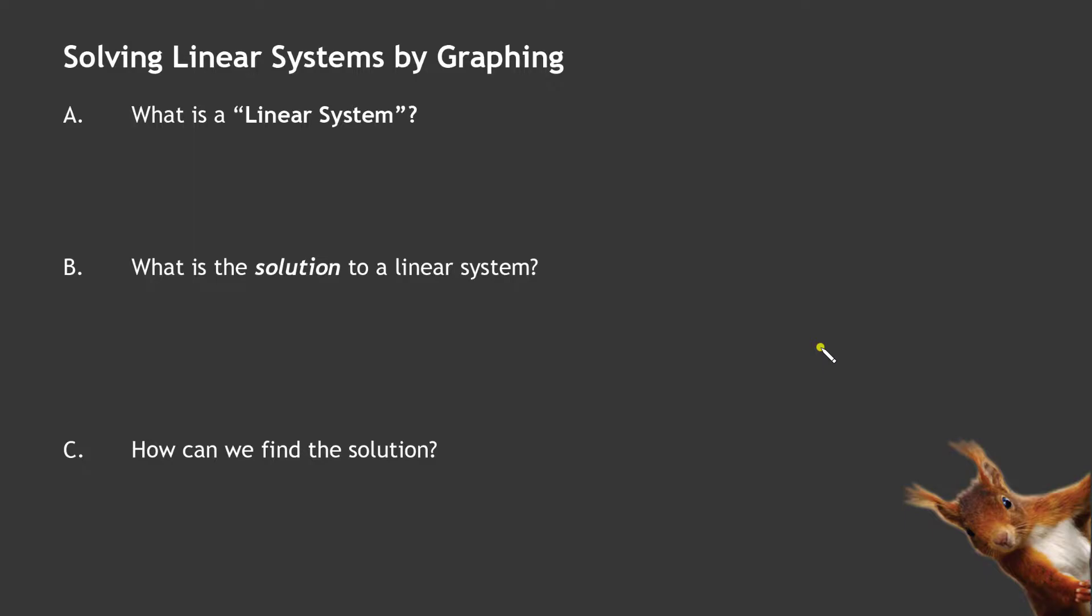So what exactly is a linear system? Let's break this down. Well, linear just means it's a line, so it's a straight line, so one or more, and that's where the word system comes into play.